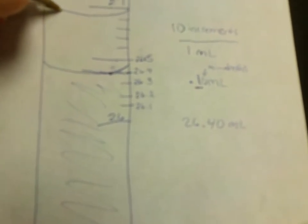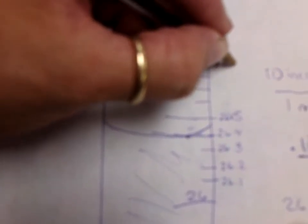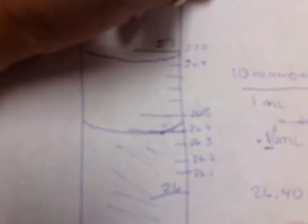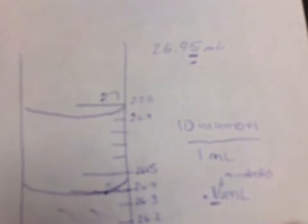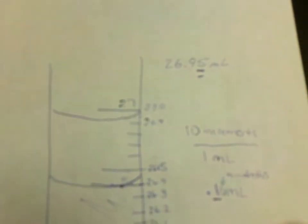If for instance, my line, if this were my line here, this would be 26.9, this would be 27.0. So because this is on the line exactly for 26.9, I might read it as 26.95. Some of you guys out there might read it as 26.94, and that's fine. Remember, this last digit is our digit of uncertainty.